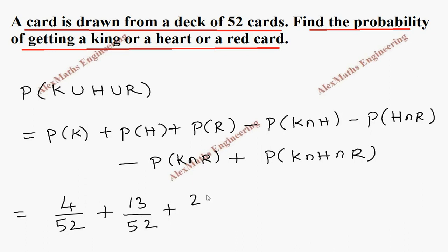A red card is 26 out of 52. And king and heart, there is only 1 card out of 52. Heart and red, there are 13 cards because heart is 13 and all the hearts are red only. The intersection between heart and red is 13 out of 52.